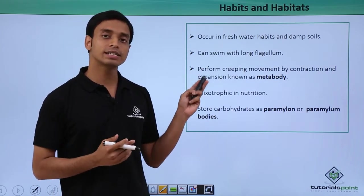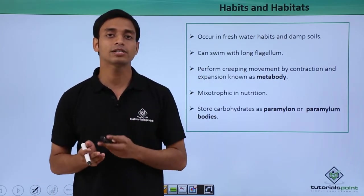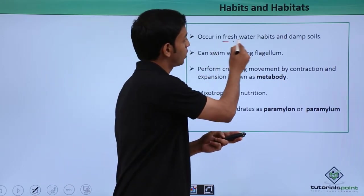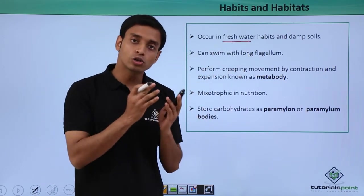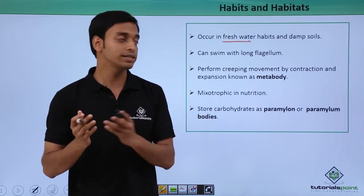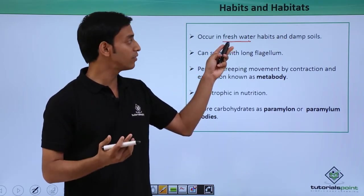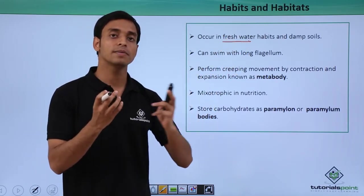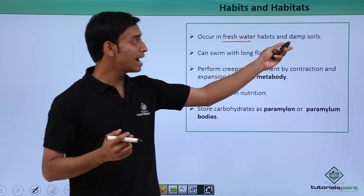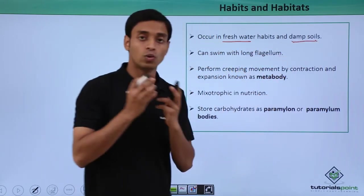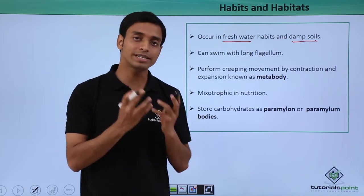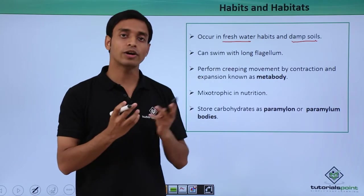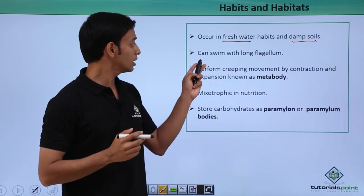Let's first discuss the habits and habitats of this group of euglenoids. They occur in freshwater and damp soils, so they require water for their survival. The presence of water is a characteristic feature so that the euglenoids can colonize.